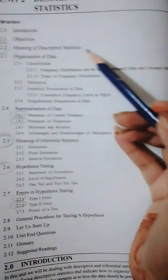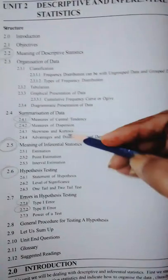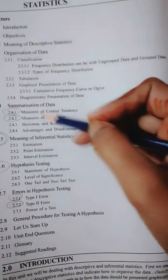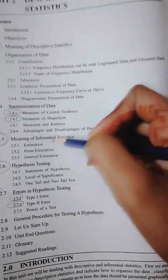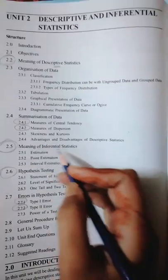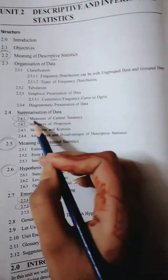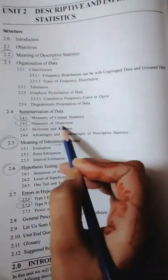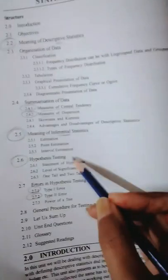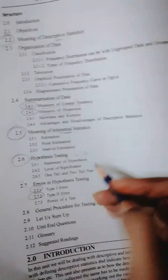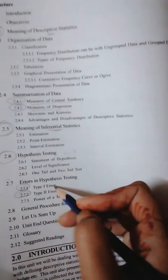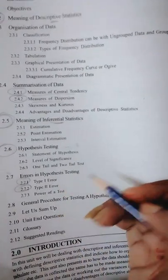You can read these topics: descriptive and inferential statistics. A difference between these two can come. Then there are measures of central tendency and measures of dispersion, hypothesis testing. This can come for I think three marks mostly, and you can read these types - two types of errors also.